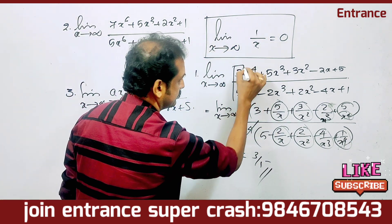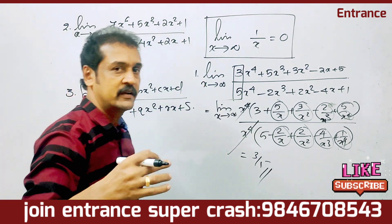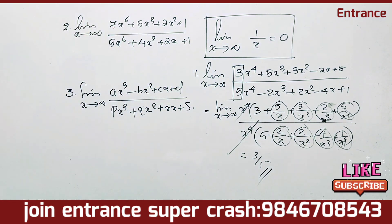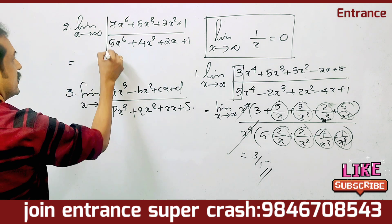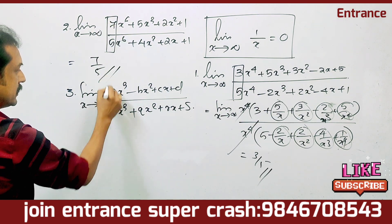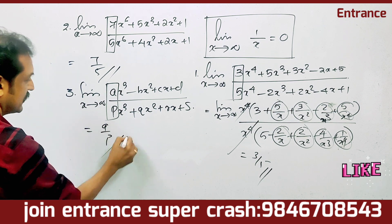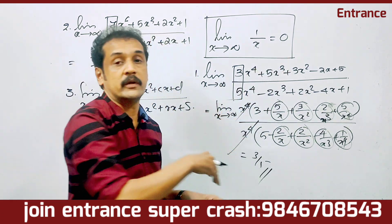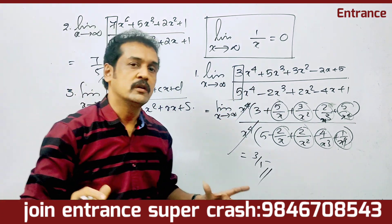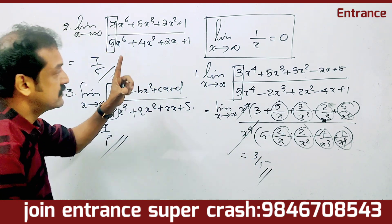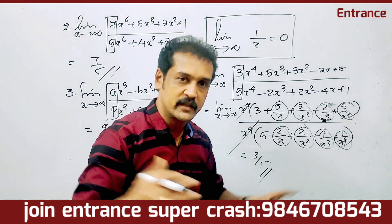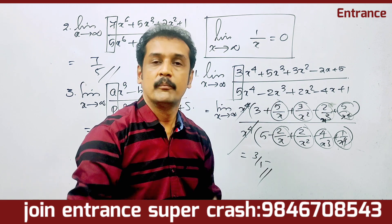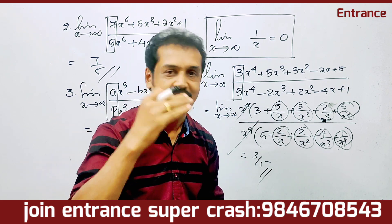This is the highest power coefficient ratio. The shortcut is: when limit x tends to infinity of a rational function, take the ratio of the leading coefficients — the highest power coefficients. This is also known as the L'Hôpital rule approach. The method and trick for the first type of question gives us 3 by 5.